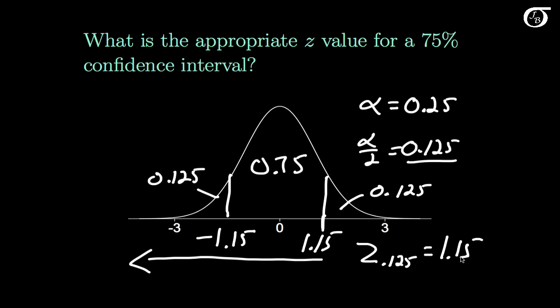The appropriate 75% confidence interval is x-bar plus and minus 1.15 times sigma over the square root of n.